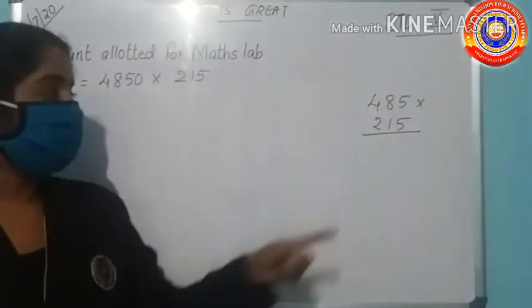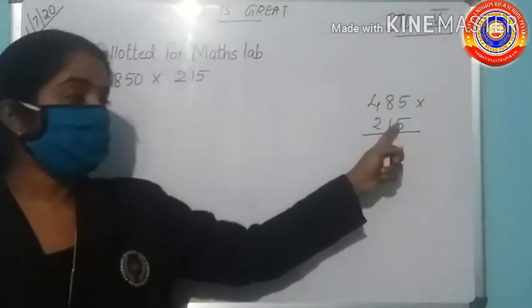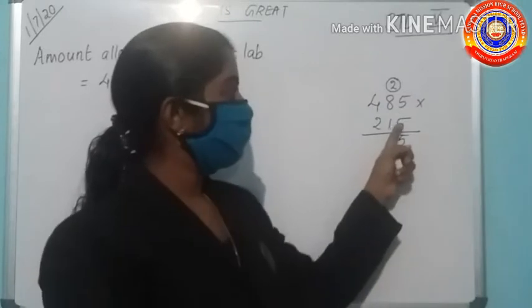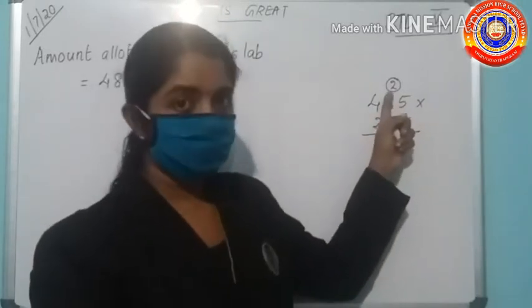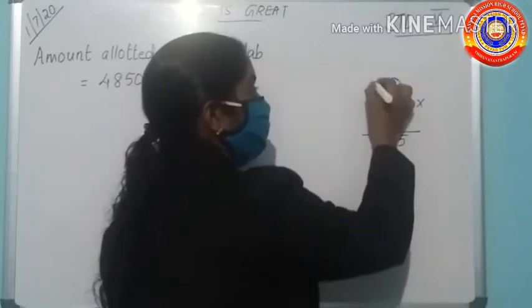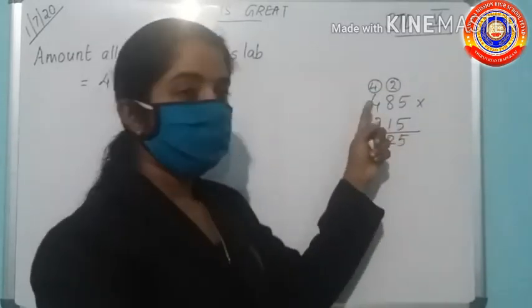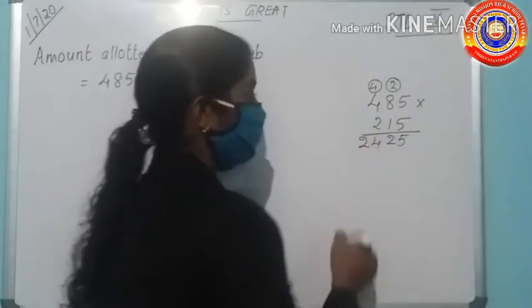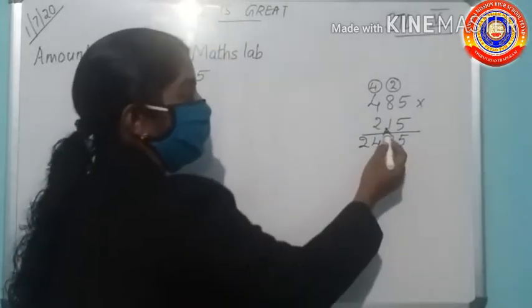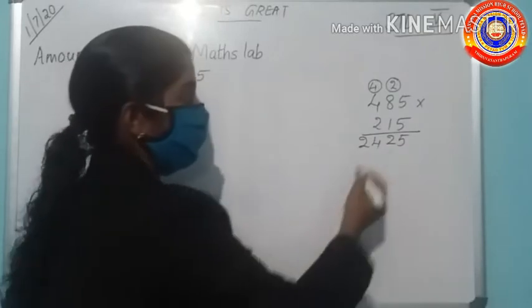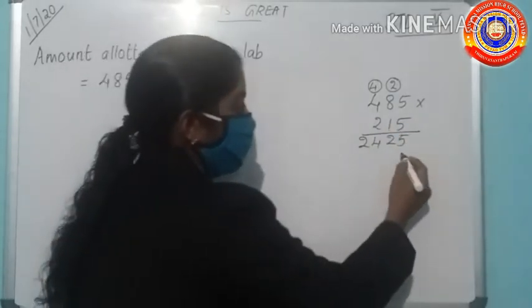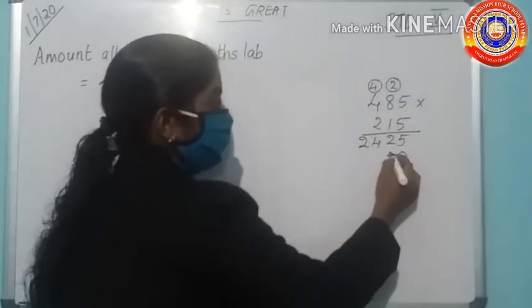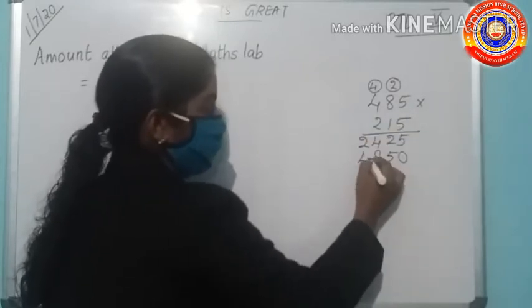Multiply this number. 5 into 5 is 25, write 5 here and carry over 2. Then 5 into 8 is 40, 40 plus 2 is 42, write 2 here, carry over 4. Then multiply 5 into 4, it is 20, 20 plus 4 is 24. You have to multiply the number in the tens place with the above three numbers. You have to give 0 to the ones place. Then 1 into 5 is 5, 1 into 8 is 8, 1 into 4 is 4.